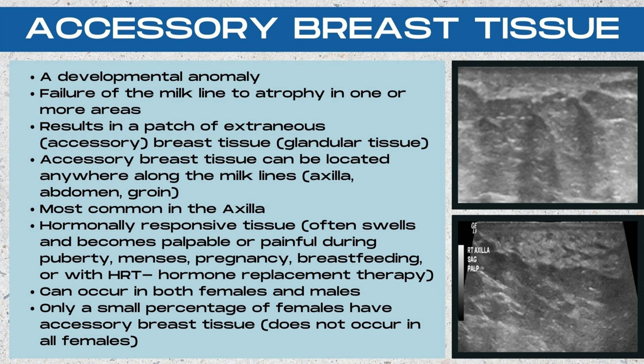Accessory breast tissue is a developmental anomaly — it's when the milk line fails to atrophy in one or more areas. The milk lines should atrophy everywhere from the axilla to the groin except in the area of the chest where the breast will form. Anywhere it fails to atrophy results in a patch of extraneous or accessory, also known as extra, breast glandular tissue. This patch can be located anywhere along the milk lines — in the axilla, the abdomen, or the groin — and the most common location is in the axilla.